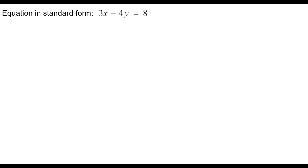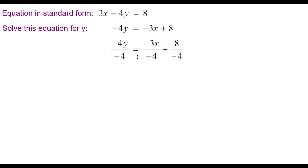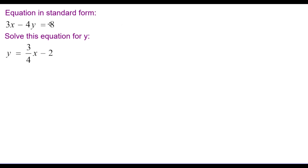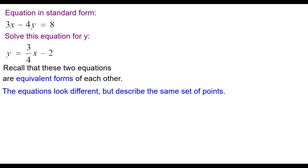Here's an equation in standard form: 3x minus 4y equals 8. Solve this equation for y. I subtracted 3x from both sides, then divided each term by negative 4, the coefficient of y. Simplifying, y equals positive 3 fourths x minus 2. So here are our equations in standard form and solved for y — equivalent forms of each other, meaning they look different but describe the same set of points.